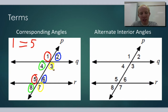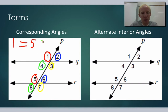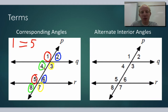So two equals six, three equals seven, and four equals eight. We can use this fact when doing proofs with transversals. It's very useful to translate an angle across and say, for example, eight equals four by corresponding angles. This corresponding angles property is going to be a very big tool.